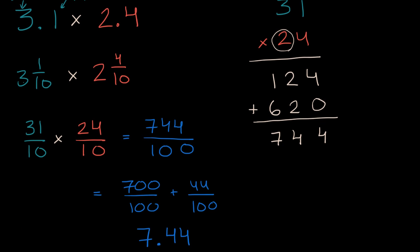And you might already be seeing a pattern. If you just took thirty-one and multiplied by twenty-four, you get seven hundred and forty-four. And notice, I have one and two digits behind the decimal point. And so think about whether that always works.